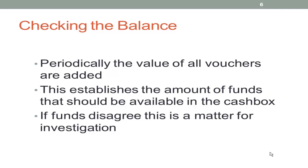Checking the balance: periodically, the value of all the vouchers is added up. For example, if you had a $200 Petty Cash balance and the vouchers total $120, you would expect to find $80 in cash still in the tin. The total of vouchers plus cash should always equal $200. If it doesn't, you need to investigate why.